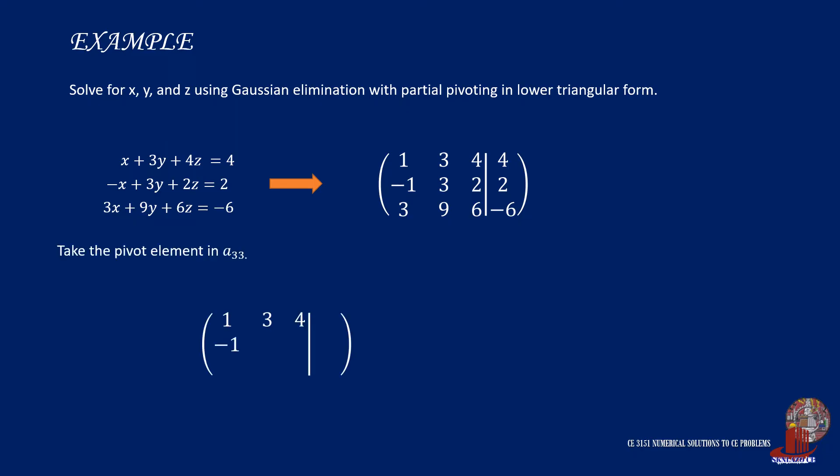Then instead of element a11, element a33 is considered as pivot element, making row 3 as the pivot row. To make the pivot element simpler, divide the whole row 3 by 3, reducing the values.